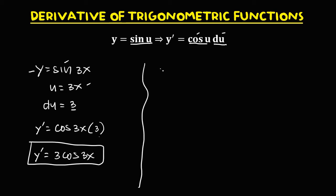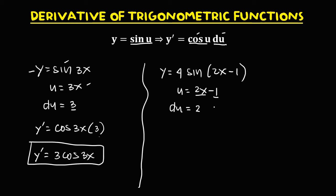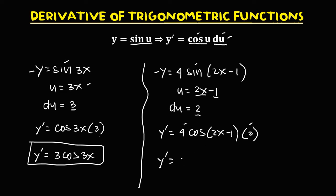For this given, y equals 4 times sine of 2x minus 1. Here u equals 2x minus 1. The derivative of 2x is 2 and the derivative of 1 is 0, so du equals 2. To find the derivative: we have 4 times cosine of 2x minus 1, times du, that's 2. So y prime equals 4 times 2, that's 8, times cosine of 2x minus 1.